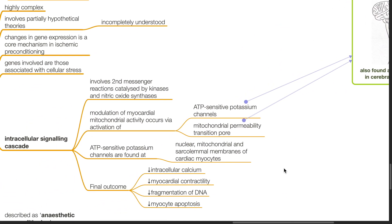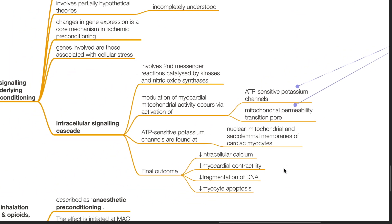These are also found abundantly in cerebral tissues. ATP-sensitive potassium channels are found at nuclear, mitochondrial, and sarcolemmal membranes of cardiac myocytes. The final outcome is a decrease in intracellular calcium, decreased myocardial contractility, decreased fragmentation of DNA, and decreased myocyte apoptosis.